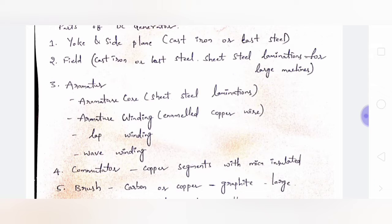The yoke and side plates are used for protection of the generator and are made up of cast iron or cast steel. The field is used to produce the magnetic field and is also made of cast iron or cast steel. For large machines, silicon steel lamination is used for the field.